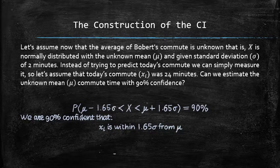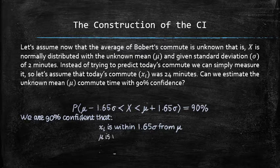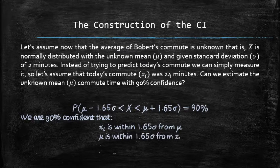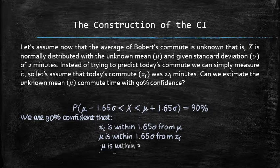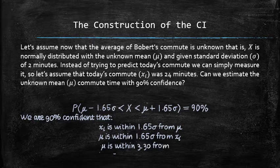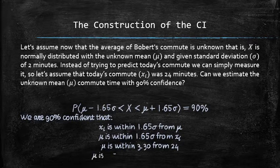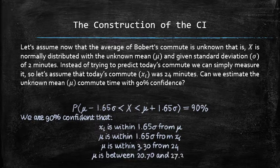But if xi is within 1.65σ from μ, that means μ is within 1.65σ away from xi. With given numbers, this implies that μ is within 3.30 from 24, which implies that μ is between 20.70 and 27.30.